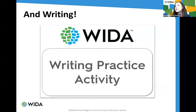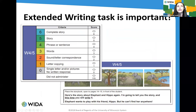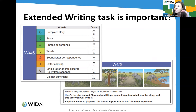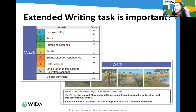Scoring writing involves many variables, so a writing practice activity is built into the training. Similar to speaking, the extended writing task is important. Writing begins with non-scored drawing activities, then asks students to copy, and moves up from there. Only at level four and five does it include any writing beyond the word level.